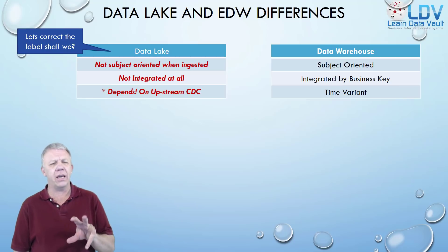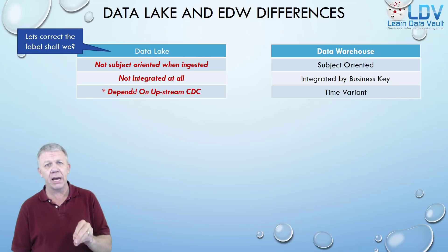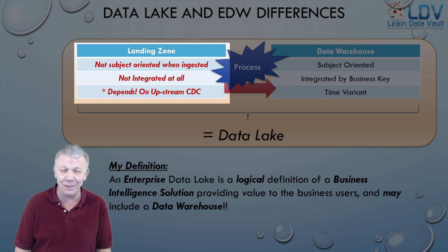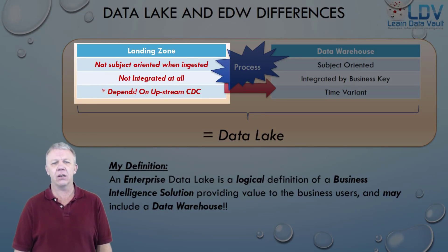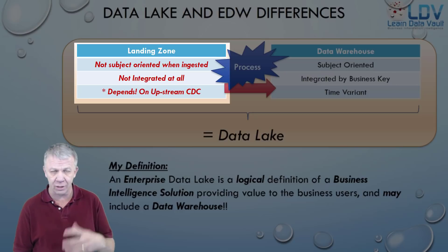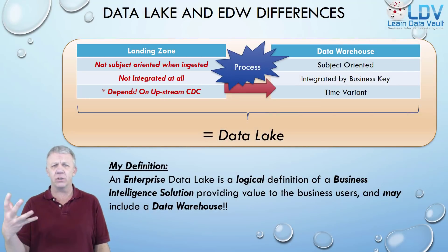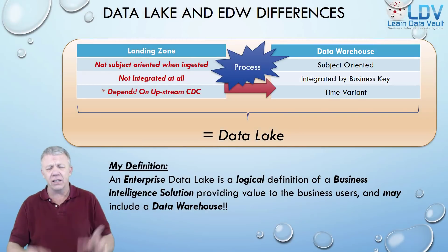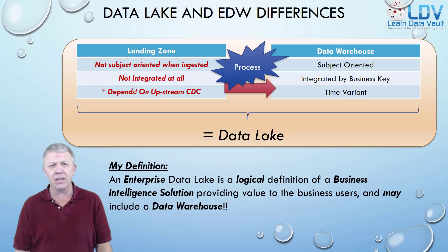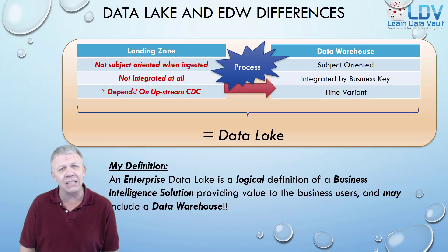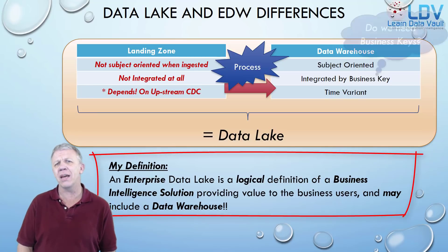Looking at these labels, a lot of data lake labels have been applied to something that's really called a landing zone. I'd like to change the definition here. I'm a nonstandard, opinionated person. The landing zone has these particular attributes: it's not subject oriented, not integrated at all, and depends on upstream CDC. Once you process the data, it becomes like a data warehouse — subject oriented, integrated by business key, time variant, and so on. To me, this is the notion of a data lake, including everything that cannot be processed. My definition of a data lake is a logical definition of a business intelligence solution that may or may not include a data warehouse.